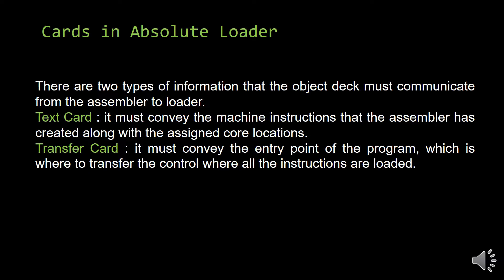Whereas a transfer card holds the entry point of the program. What is the meaning of entry point? Once all the instructions are loaded into memory, where should control pass? For example, if I have a program from location 100 to 200 and I insert all those instructions, where should my control pass? That location will be mentioned in the card known as a transfer card. So the assembler passes two cards to the absolute loader: a text card and a transfer card.